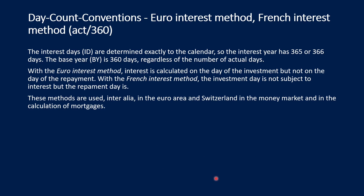The first day count convention is the most straightforward: the Euro interest method, also called the French interest method. The interest days — the numerator — are determined exactly by the calendar, so the interest year has 365 or 366 days; you simply count the days in the calendar. This can easily be done in a spreadsheet like Excel: one date minus the other gives you an integer representing the number of days. The base year — the denominator — is always 360, regardless of the actual number of days, so leap years are completely ignored.